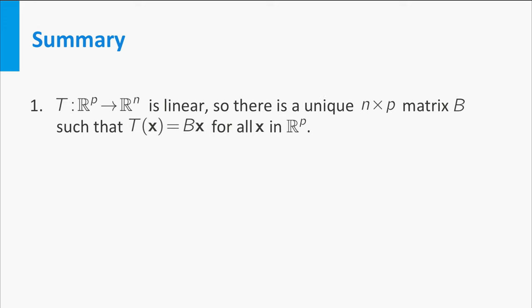Let's summarize the result. We have a linear transformation T from Rp to Rn. Since the transformation is linear, a unique n by p matrix B exists such that T of x is B times x for all vectors x in Rp.